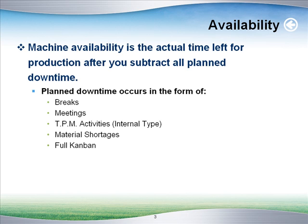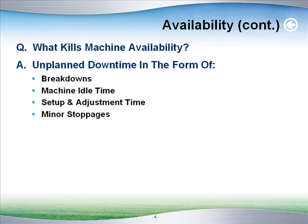Your machine was available to run, but it couldn't run because it didn't have the material it needed, or the Kanban was full. What kills machine availability? Well, unplanned downtime. That comes in the form of breakdowns, machine idle time, setup and adjustment time, and minor stops.